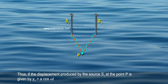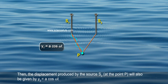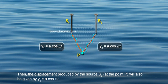Thus, if the displacement produced by S1 at the point P is given by Y1 = A cos ωt, then the displacement produced by the source S2 at the point P will also be given by Y2 = A cos ωt.